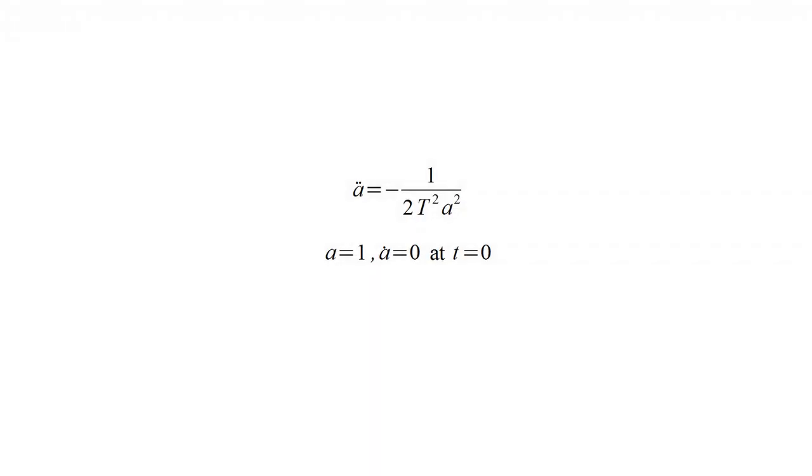The cosmic scale factor equation says that a double dot is negative. This means that the curvature of a plot of the scale factor through time will curve downward. Let's assume at time zero, a is one, and a dot, the rate at which a is changing, is zero. This describes a universe in which all particles are at rest relative to one another.